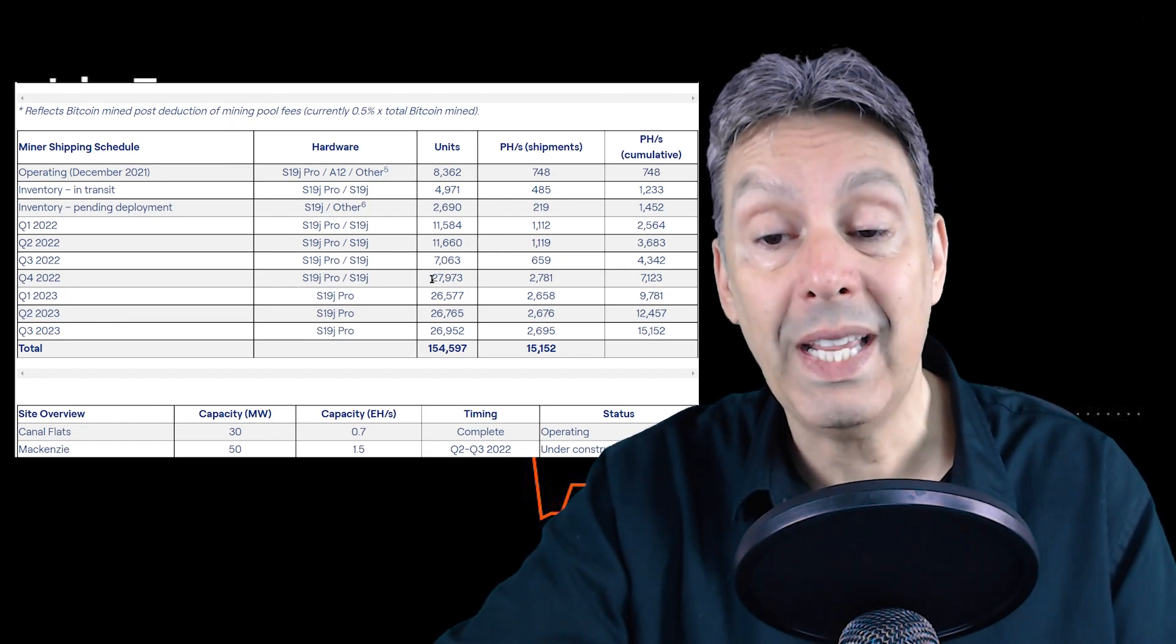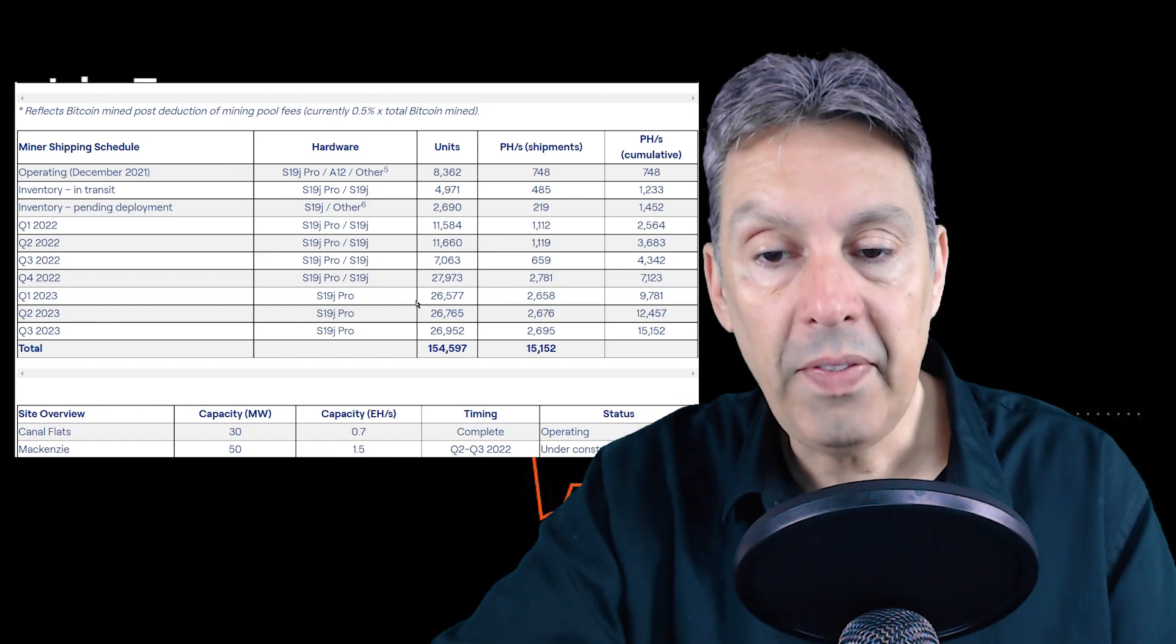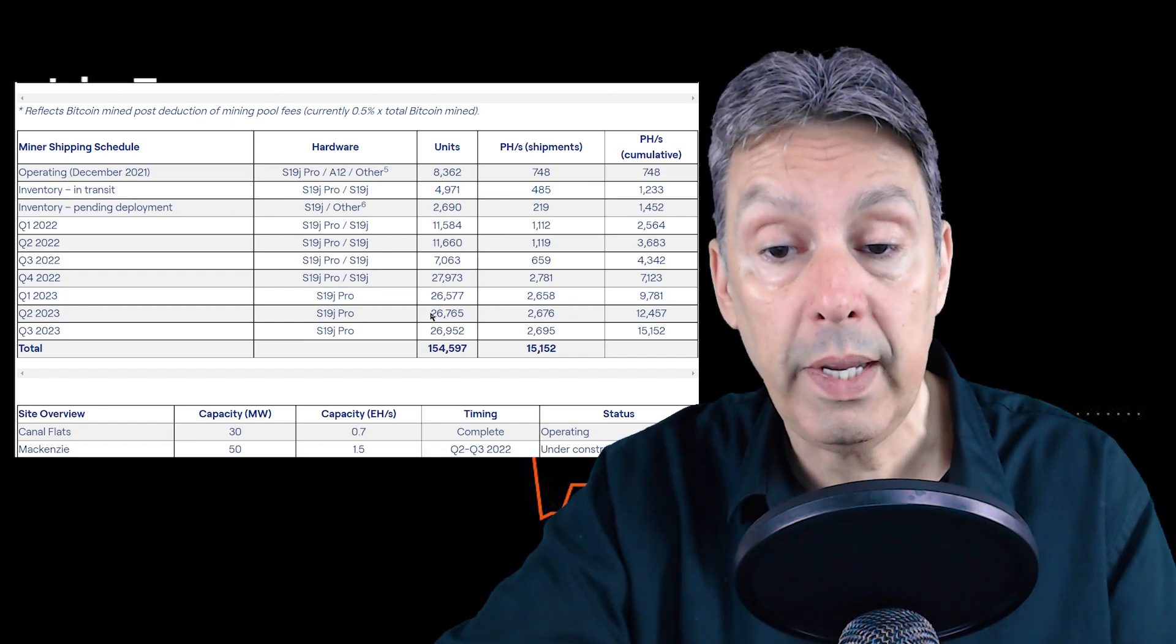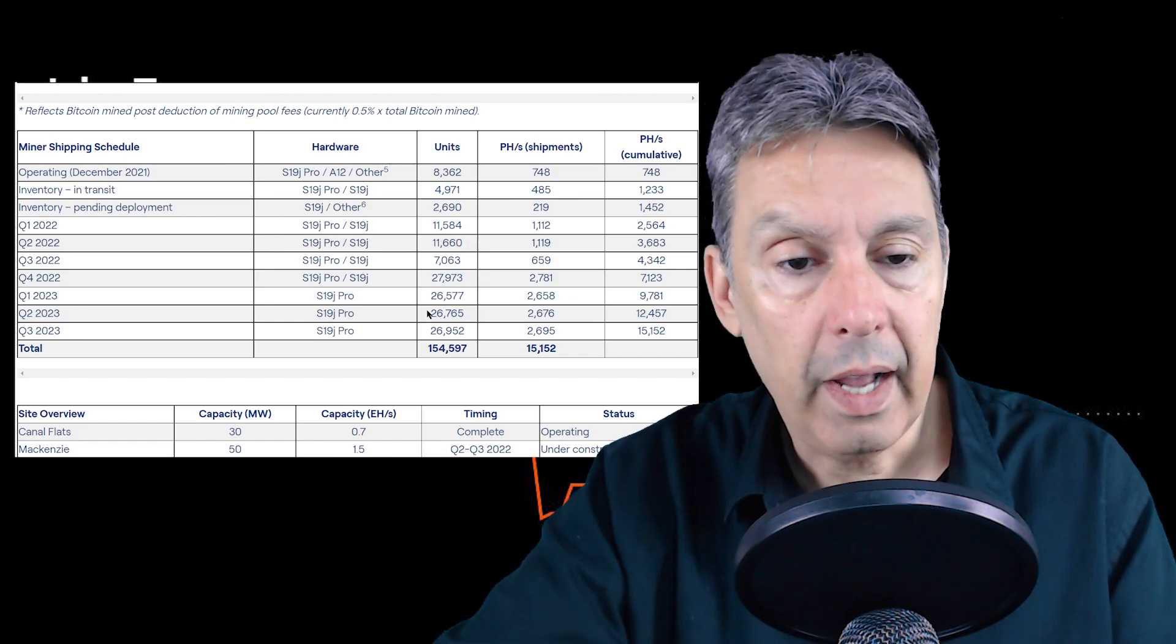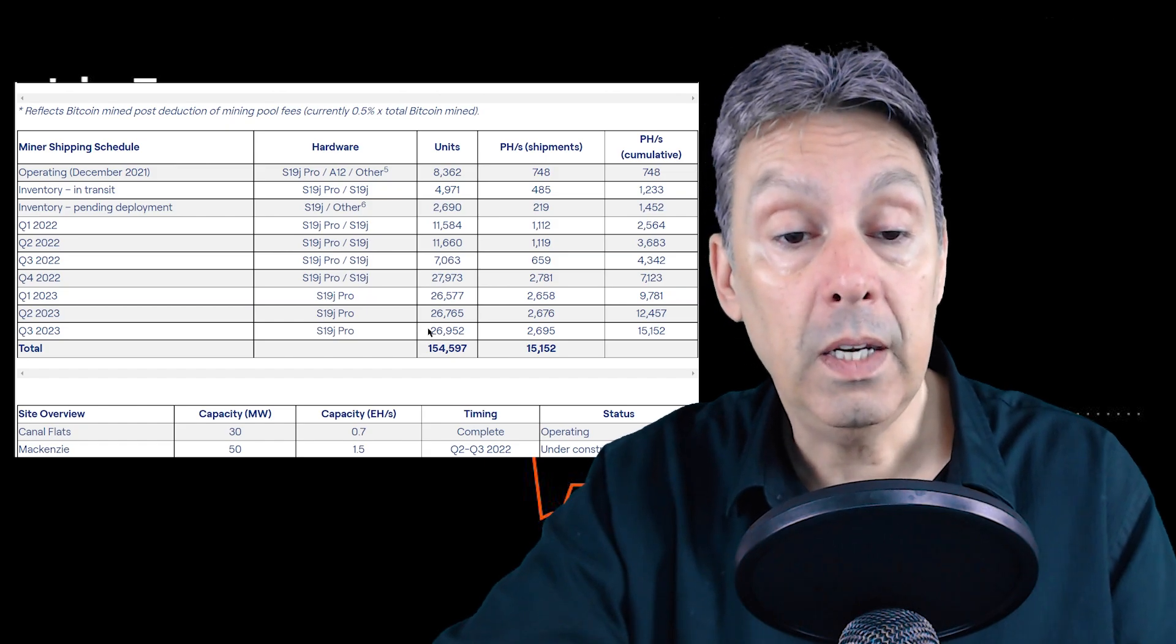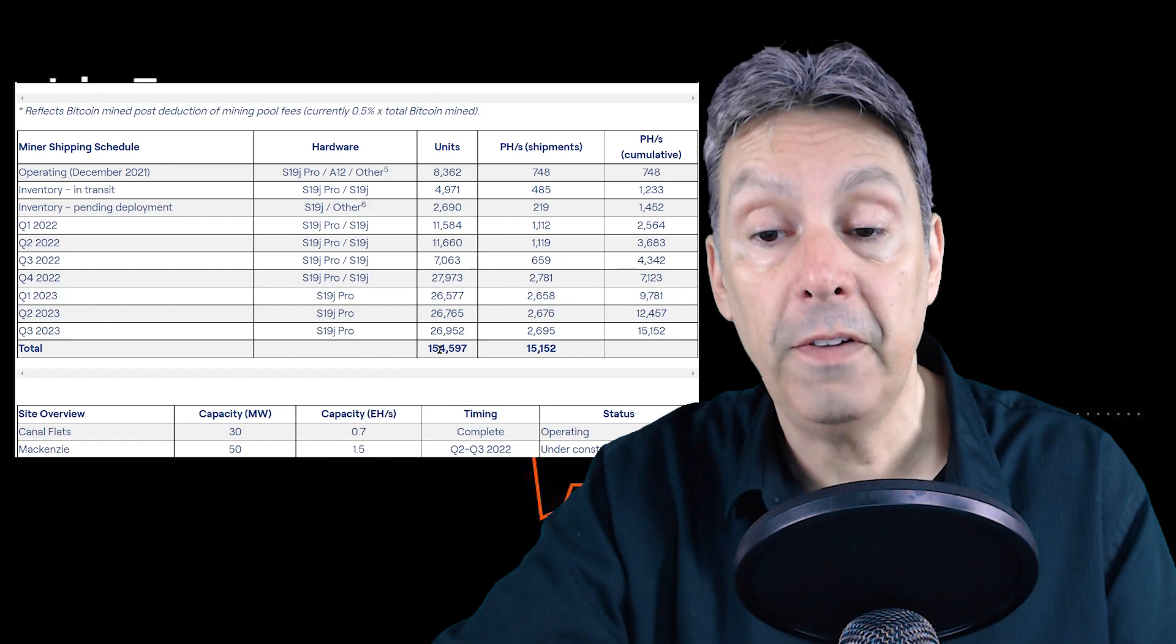And then you'll see not only is this aggressive, in Q4 they ramp this up to almost 28,000 machines delivered in Q4 of 2022. And then another 26.5 thousand in Q1 of 2023, another 26.7 thousand in Q2 of 2023, and then finally 26.9 thousand in Q3 of 2023. So that equals their 154,597 machines that they need to have delivered and installed.